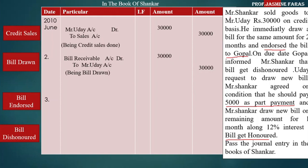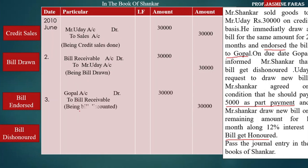Now for bill endorse — close your eyes for two minutes and think: Shankar gave the bill to whom? Endorse means transfer. He transferred the bill to Mr. Gopal. In this case, the receiver is Mr. Gopal and the giver is Mr. Shankar, but we don't write Shankar's name. What goes out from Shankar? Bill receivable. So the entry is: Gopal account debit to bill receivable, being bill endorsed.